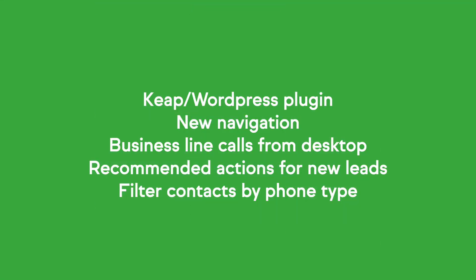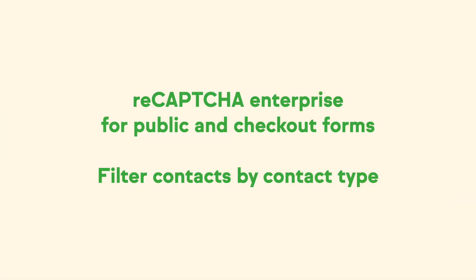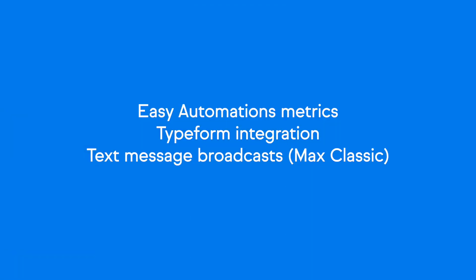Here is a quick recap of the new features and updates we showed you today: we brought you a Keep WordPress plugin, Keep Business Line calls from desktop, recommended actions for new leads, and the ability to filter contacts by phone type. Let me know in the comments what feature you're most excited about. Here's a list of other updates and improvements we've made in the last 30 days. You can view more detail about each of these features in our product release notes which are linked in the video description. Here are a few of the things we have coming up next month: easy automations metrics, a native Typeform integration, and text message broadcasts to the Max Classic edition. Join us next month for more detail. Bye!